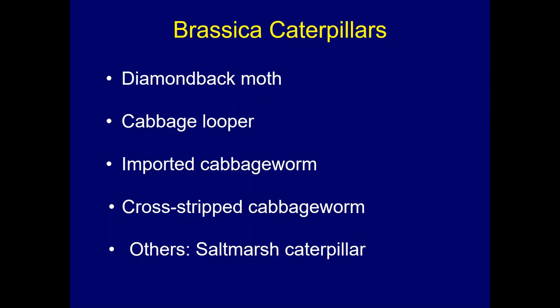I want to follow up on topics presented last week dealing with caterpillar pests in brassicas. We have a number to be concerned about: the diamondback moth, the cabbage looper, the imported cabbage worm, the cross-striped cabbage worm, and others. Last week we heard good information about the diamondback moth and cabbage looper. Today I want to discuss the other caterpillars — their biology, identification, and management practices.